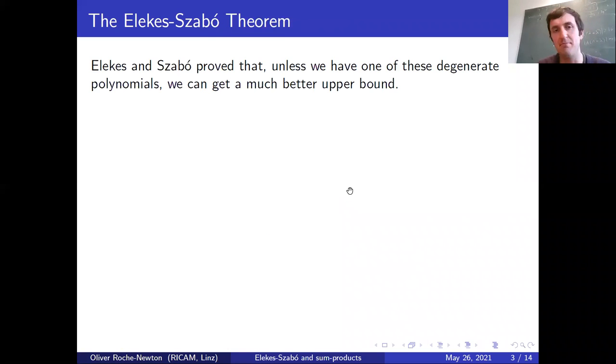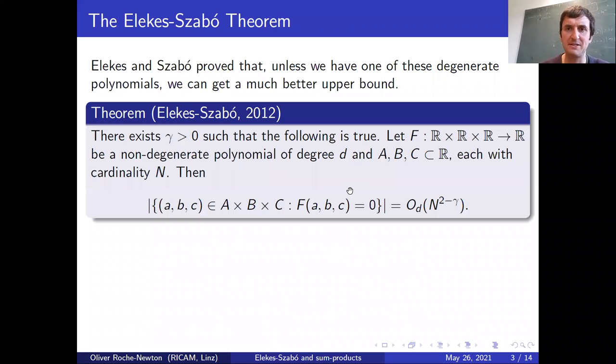These are the degenerate cases, but if f is somehow far away from these cases, it turns out we can do better. This is the Elekes-Szabó theorem. They prove that there's some positive gamma such that for sets A, B, C of the same size, the number of solutions—the intersection of the surface with this grid—is bounded by about N to the 2 minus gamma. Some polynomial saving over the trivial bound.